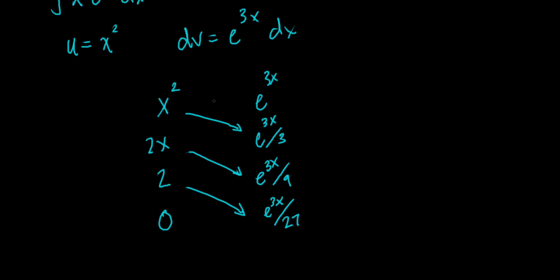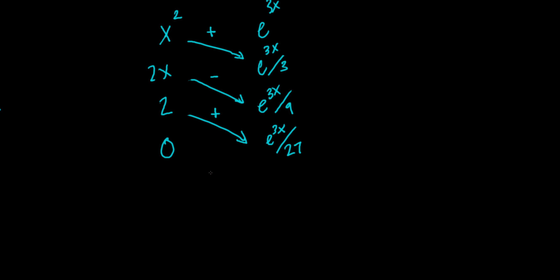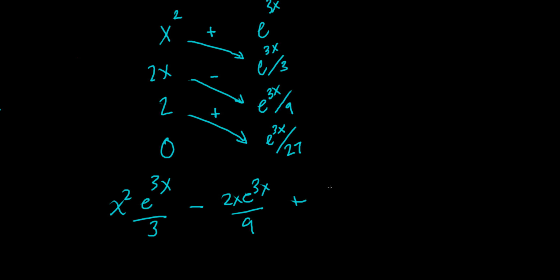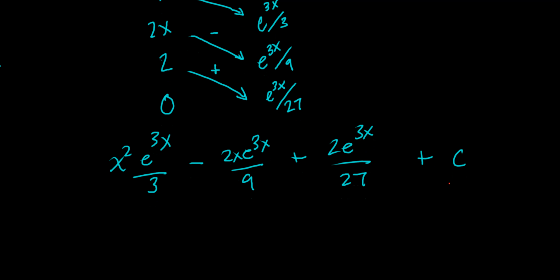The final step is to set up alternating signs. The first diagonal product is always positive, the next negative, the next positive, and so on. So we get positive x squared times e to the 3x over 3, minus 2x times e to the 3x over 9, plus 2 times e to the 3x over 27, plus C. We're essentially at the same point we reached before simplifying, but we got there much more quickly.